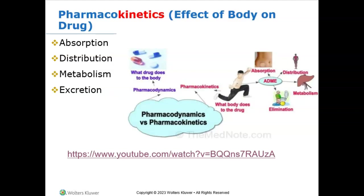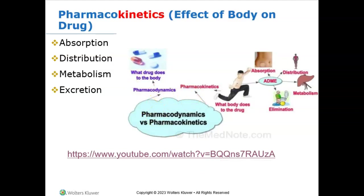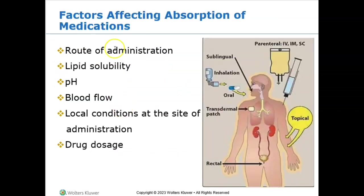That covers pharmacokinetics. Now, pharmacodynamics — what's the difference? Some different factors affect absorption of medications. We just talked about first pass effect. The quickest way something gets absorbed is via IV, because it goes right into the venous system with nothing affecting absorption.